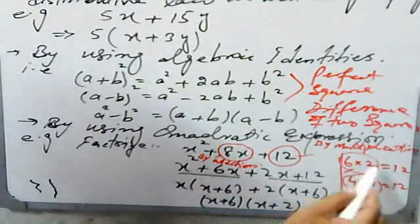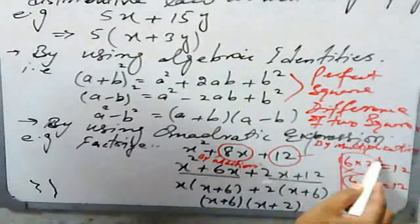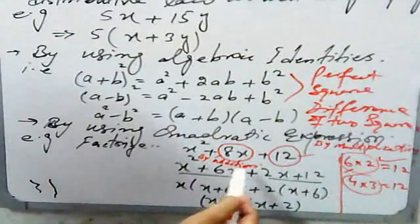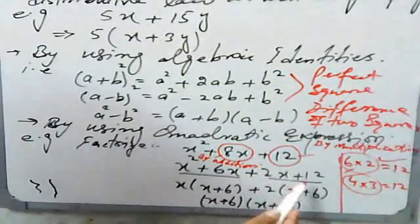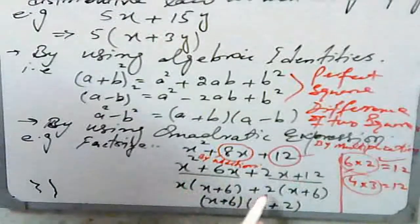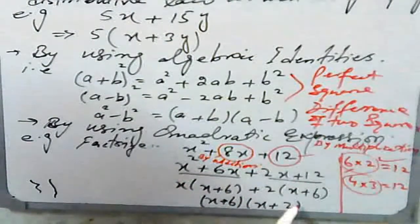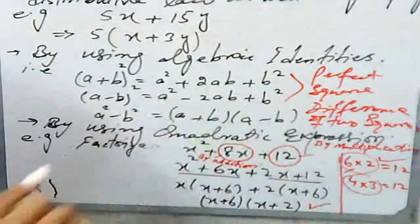By grouping, take the common factors: (x+6)(x+2). So here are the factors.